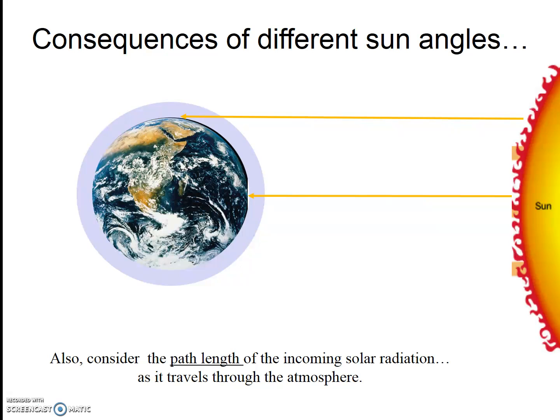Next, let's consider another consequence of these different sun angles. Let's consider what happens to the path length of incoming solar radiation as it travels through the atmosphere. If we assume the Earth's atmosphere is of relatively uniform thickness, as I've drawn here, the sunlight coming in directly travels through less atmosphere than the sun coming in at a lower angle. I'll say that again. The sun that's going to come in and hit the Earth at a 90 degree angle travels through less atmosphere than the same sunlight that's coming in and hitting the Earth at a lower sun angle. This sunlight has to travel through more atmosphere before it hits the Earth.